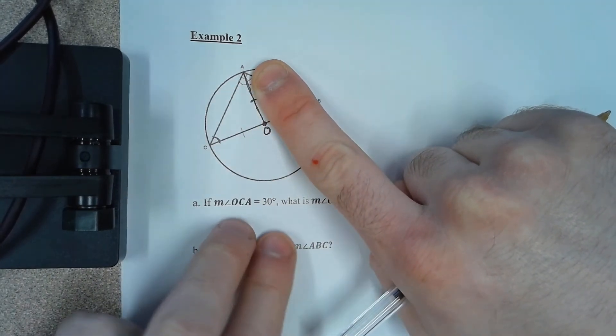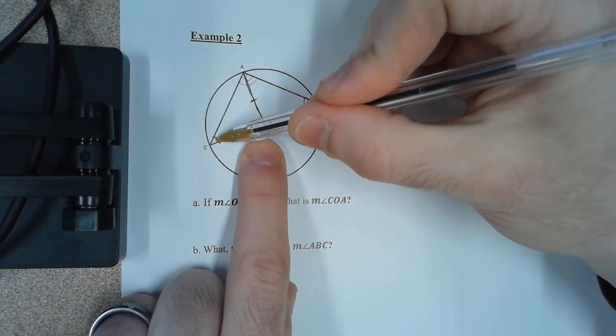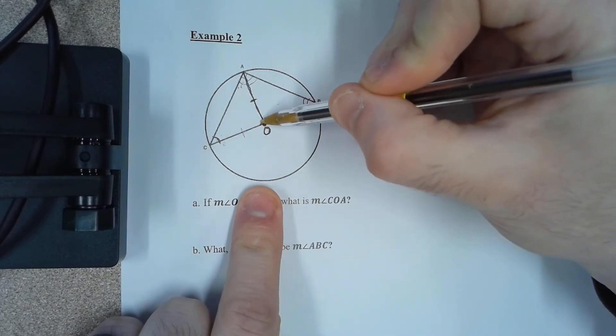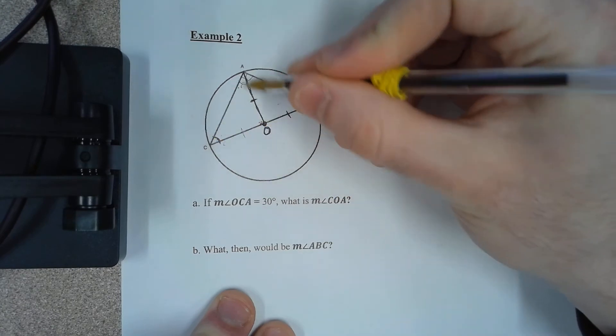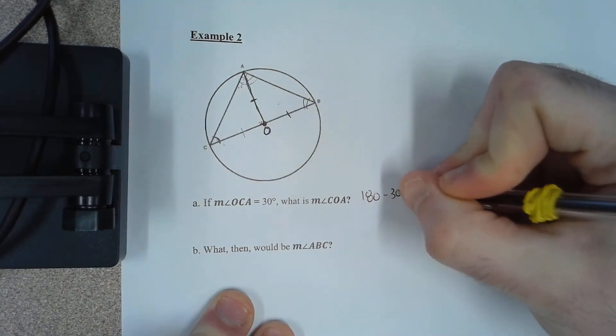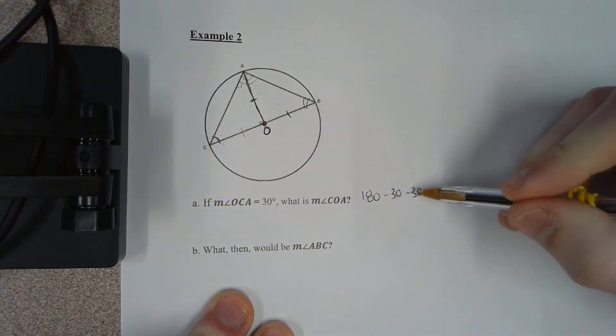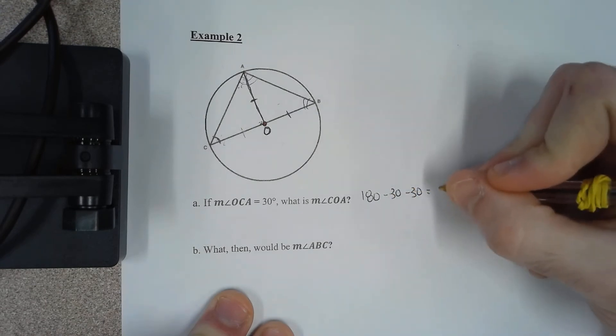What's this angle then? Well, if that's 30 and that's 30, these two have to add up with this one to equal 180 degrees. So the measure of COA is 180 minus 30 minus 30. 30 plus 30 is 60. 180 minus 60 is equal to 120 degrees.